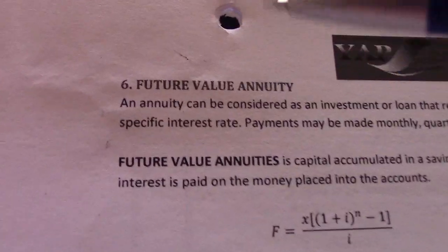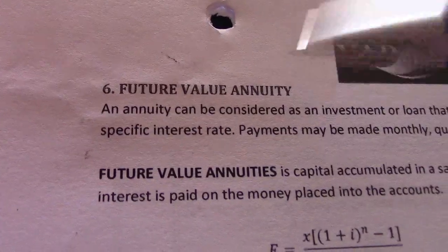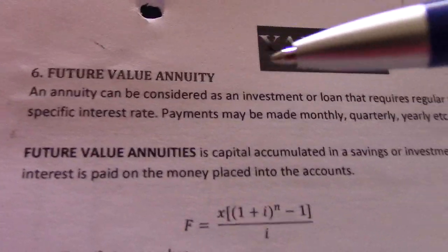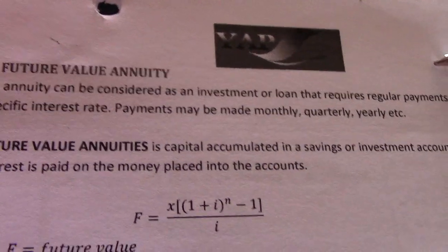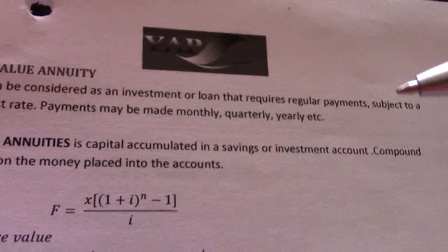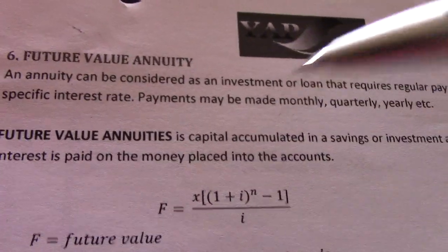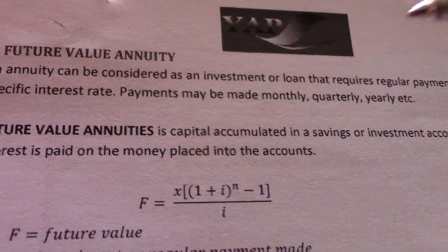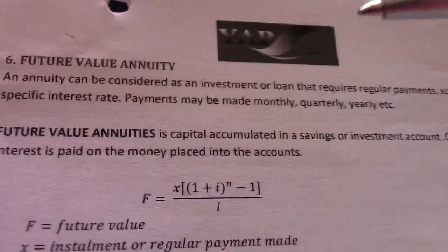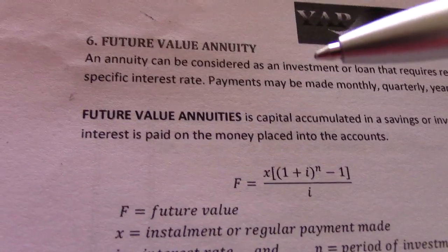All right, welcome back. Now we're looking at future value annuity. In short, annuity can be considered as an investment or loan that requires regular payments covered by a specific interest rate. Payments may be made monthly, quarterly, yearly, etc. As long as you're paying more than once, we are dealing with annuity.